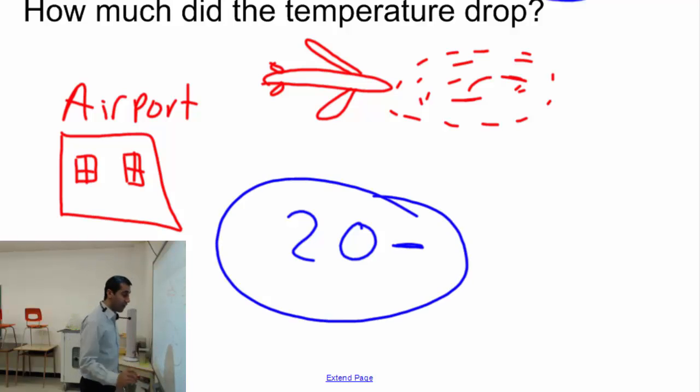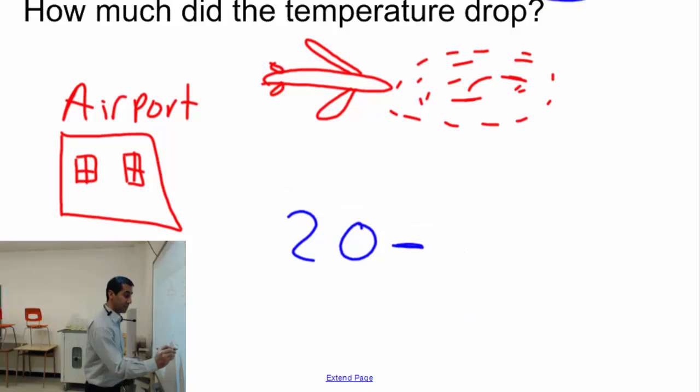Ignore what we did before. I need to write down minus 25 here. So, let's write it down. Minus 25.